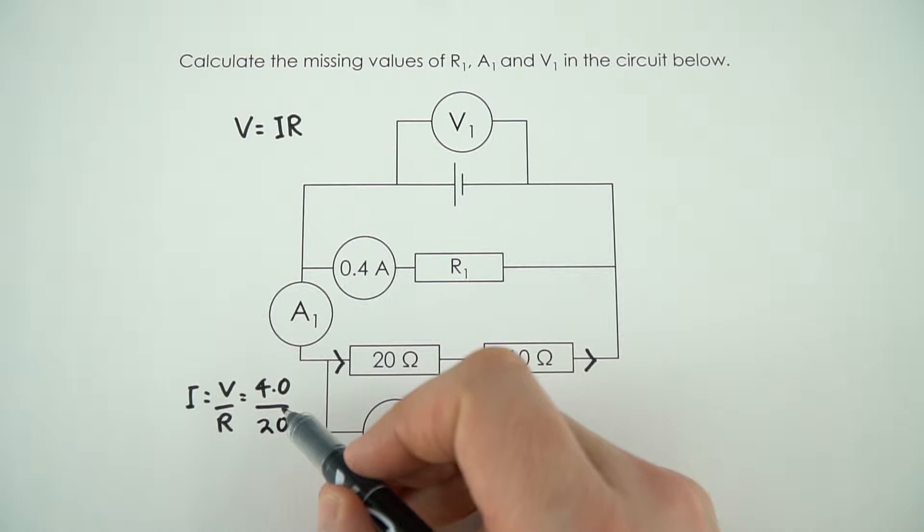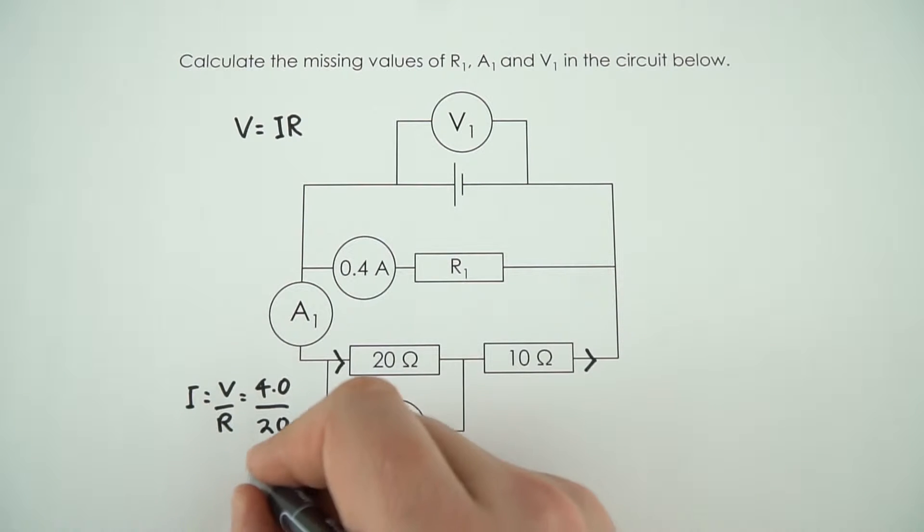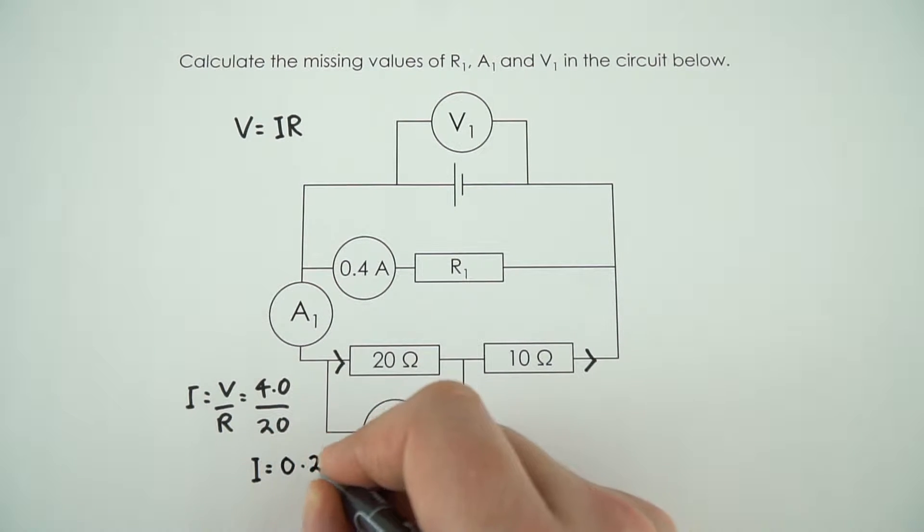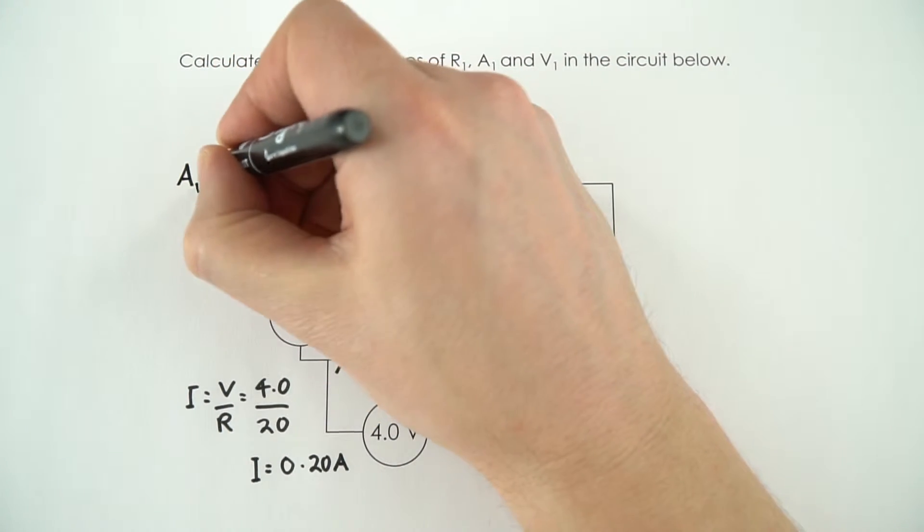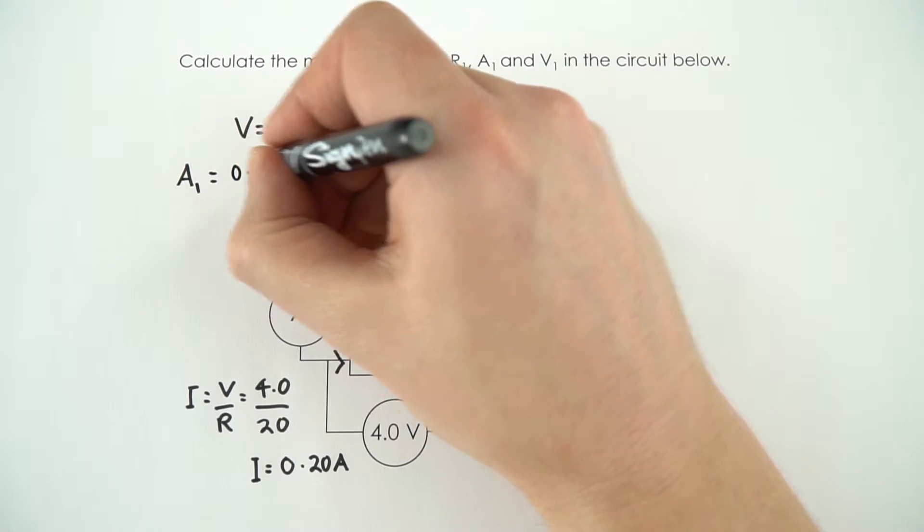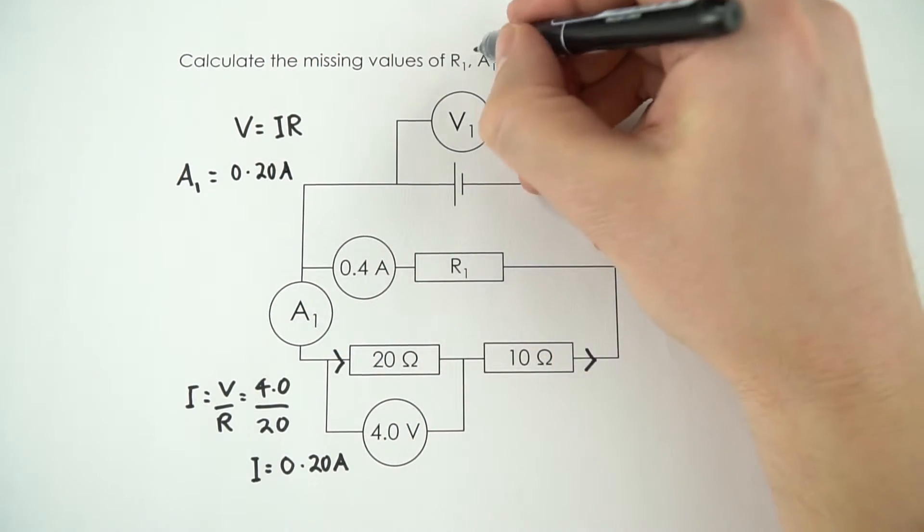So 4 divided by 20 is the same as 1 divided by 5, and that's just a fifth, so that means the current here is going to be equal to 0.20 amps. So what that means is our value for ammeter 1 is equal to 0.20 amps. So that's the first bit of information that we know.